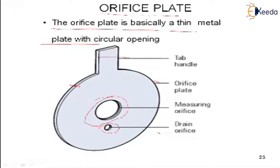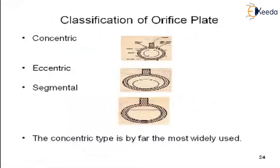Before going into the detailed description, let me cover the types of orifice plates. There are three types: the first is concentric, the second is eccentric, and the third is segmental. In the concentric type, this is the pipe diameter and this is the orifice — the plate has a central circular opening aligned with the pipe center.